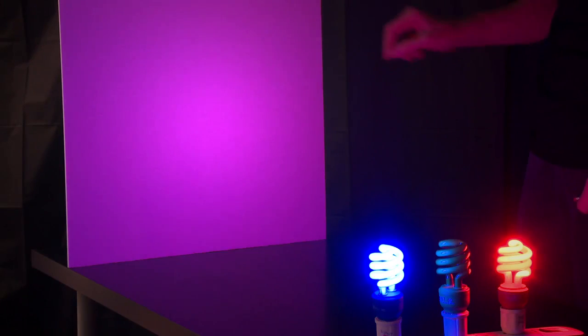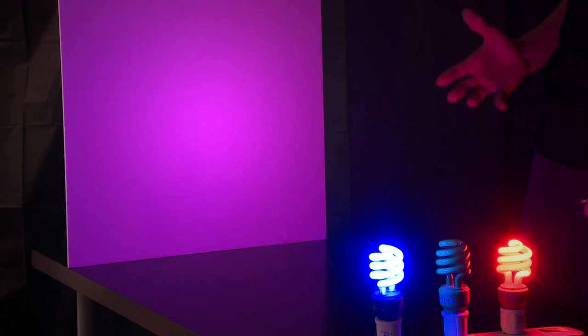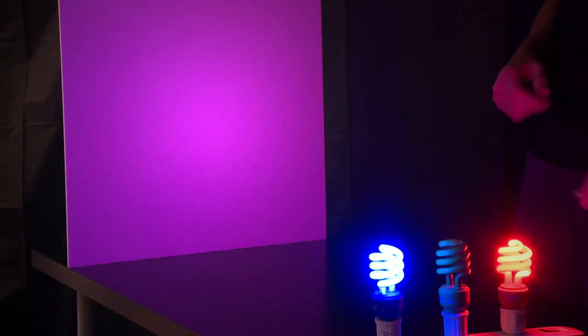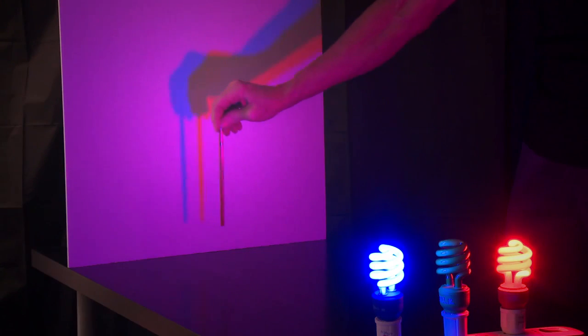When the red light and the blue light shine on the board, they scatter off the board and you see a magenta color. When I make my shadow, I see two different shadows.